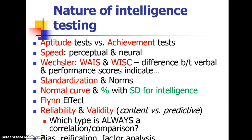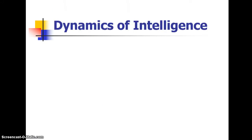Know some basic ideas about bias in intelligence testing. Reification means taking something intangible and trying to measure it with a number. Factor analysis is a way to determine both intelligence and personality scores, so make sure you know what that term means when you see it.